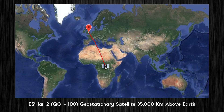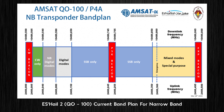OSCAR 100 is a Phase 4 transponder on the Es'hail-2 satellite, hovering around 35,000 kilometers above central Africa. You can see from this image where Es'hail-2 is located, and the red line indicates its line-of-sight path from my home location. The downlink frequency we receive on is 10.4 gigahertz, and the uplink frequency we transmit on is 2.4 gigahertz.